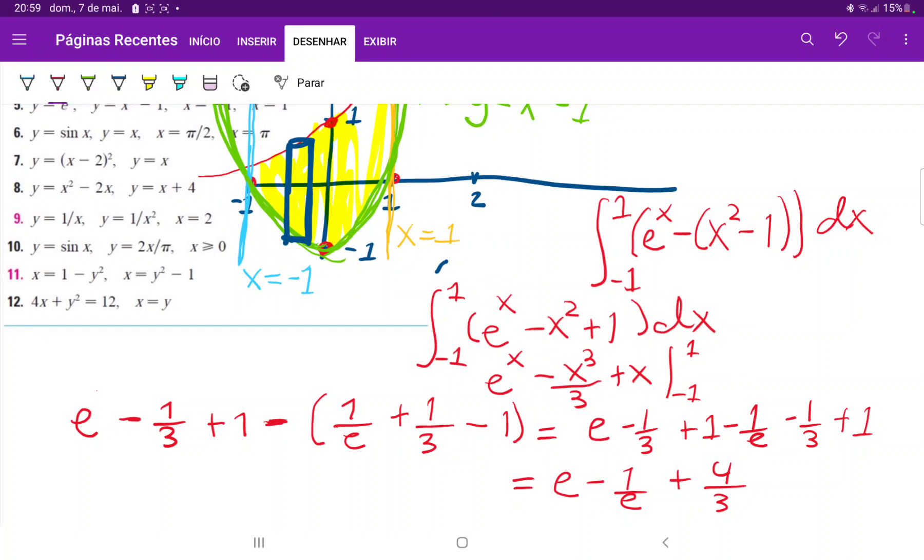I hope it became clear why we're integrating with respect to x: our vertical rectangles consistently have the same upper and lower functions throughout the region. This would not be the case if we drew them horizontally.